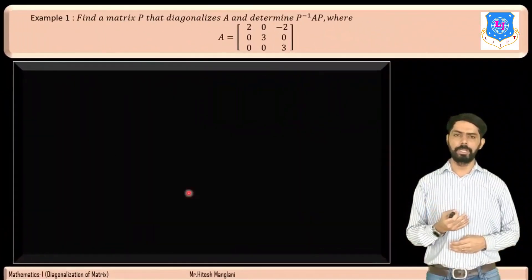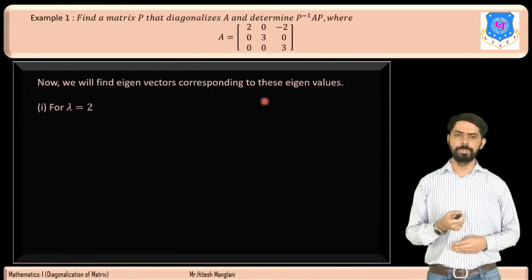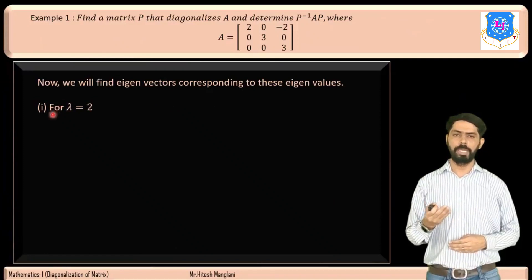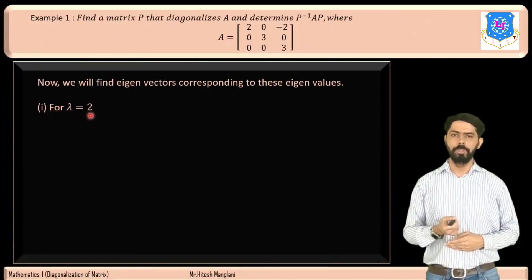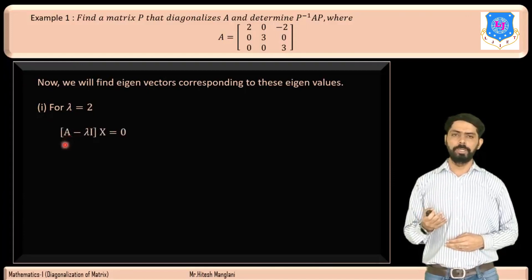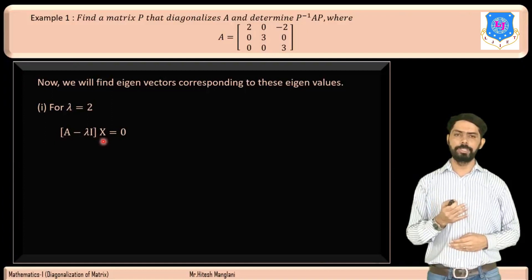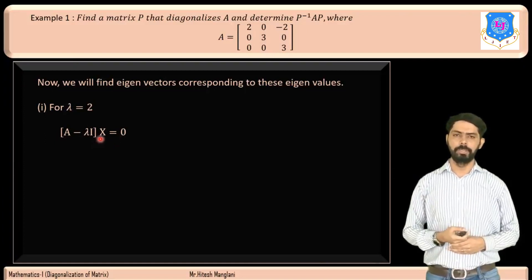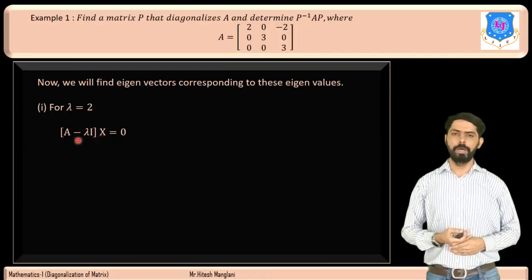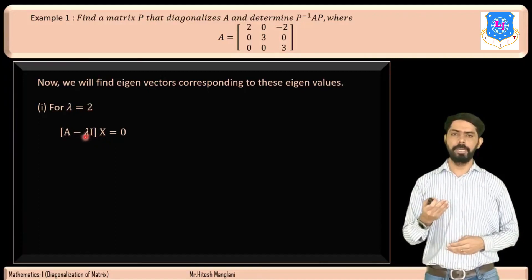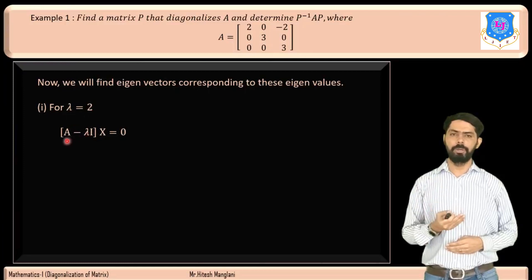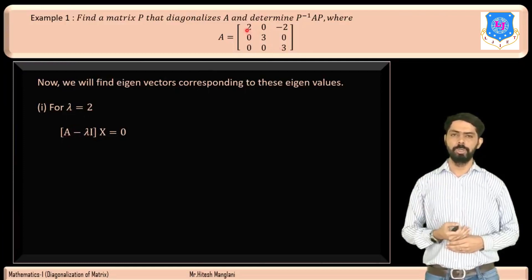Now we will find eigenvectors corresponding to these eigenvalues. First, we find eigenvectors for λ = 2. According to the definition, (A − λI)X = 0, where X is the eigenvector. We subtract λ = 2 from the principal diagonal elements to find A − λI.